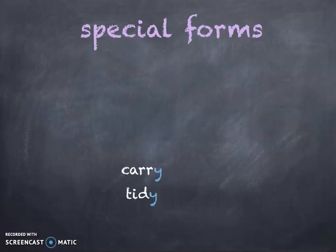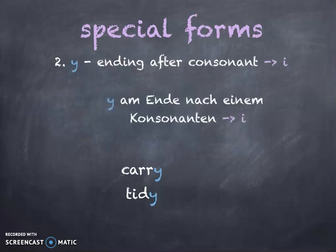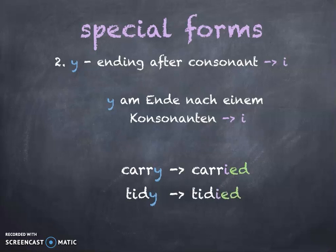The next special form is when you have a 'y' at the end after a consonant. A 'y' at the end after a consonant becomes an 'i'. So when you have 'carry', the 'y' is gone, you have an 'i' and then you add 'ed' to get 'carried'. The same with 'tidy': no 'y' anymore, you have an 'i' and then you add 'ed' to get 'tidied'.